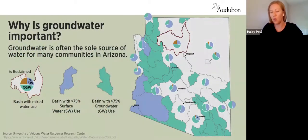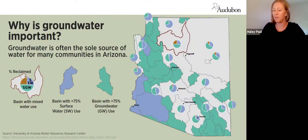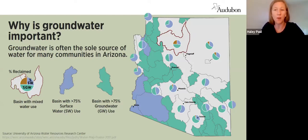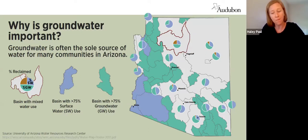Groundwater is often the sole source of water for many communities in Arizona. Here you can see the percentage of groundwater versus surface water used in various parts of the state. Surface water is water from rivers, lakes, and streams. The blue areas shown here depend primarily on surface water, while the green areas depend primarily on groundwater, and the gray areas have a mix of water supply.